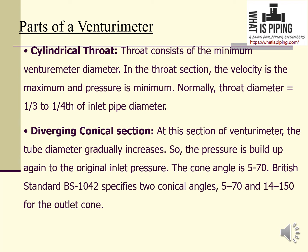The cylindrical throat consists of the minimum venturimeter diameter. In the throat section, the velocity is at its maximum and pressure is at its minimum. Normally the throat diameter is equal to one third or one fourth of the inlet pipe diameter.